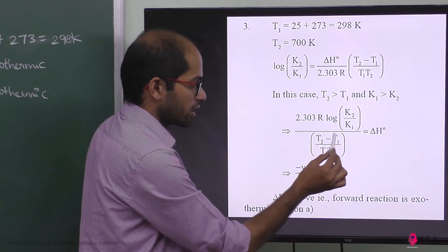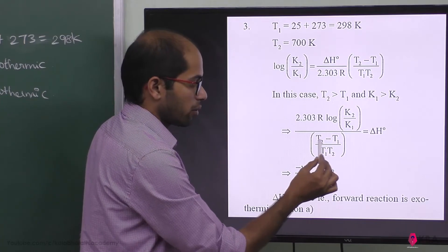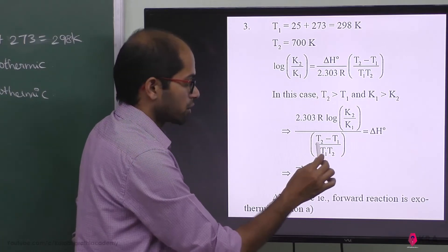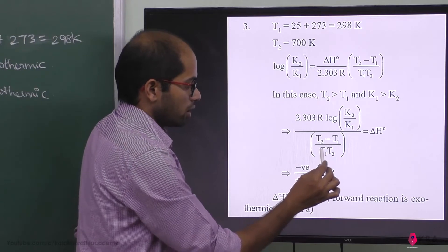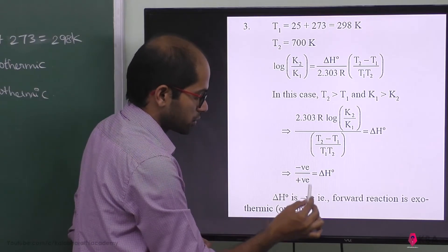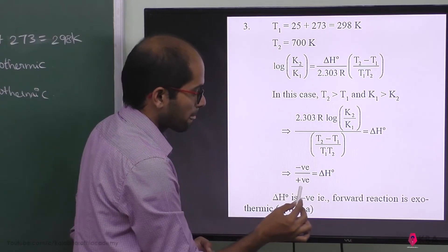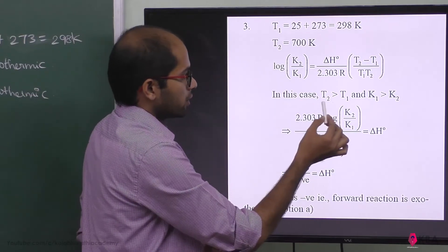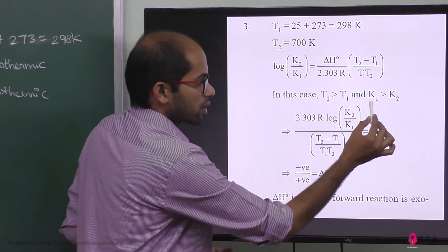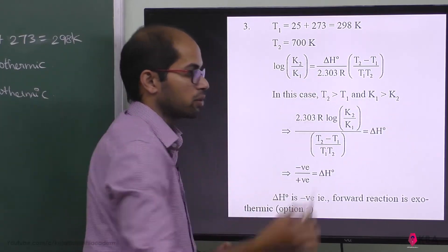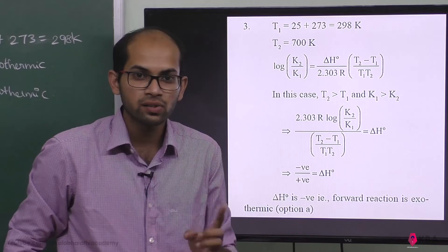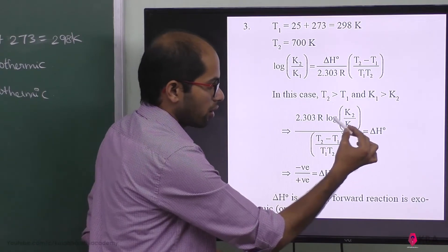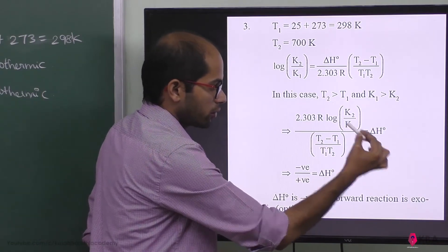Since 700 Kelvin minus 298 Kelvin is a positive value, the denominator is positive. However, since K1 is greater than K2, the formula log(K2/K1) — which is log of a smaller value divided by a larger value — gives a negative result.